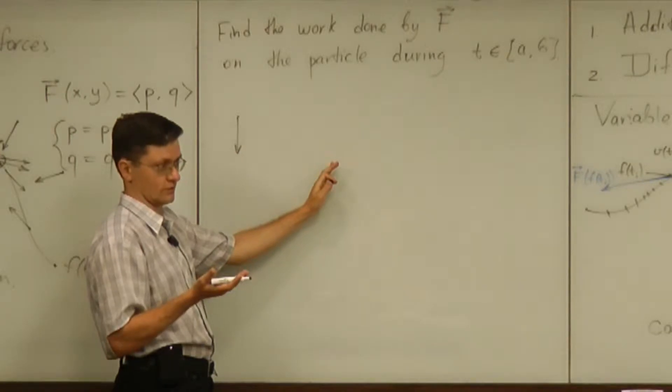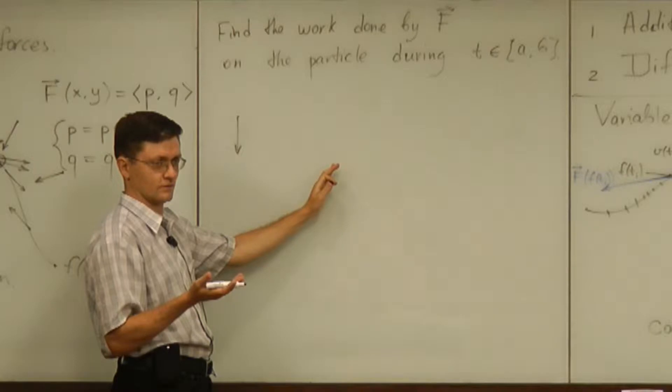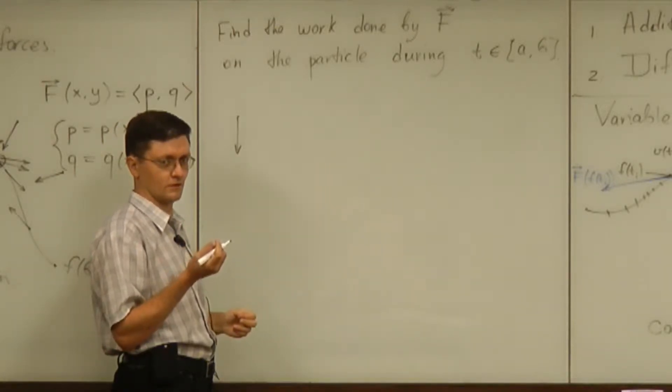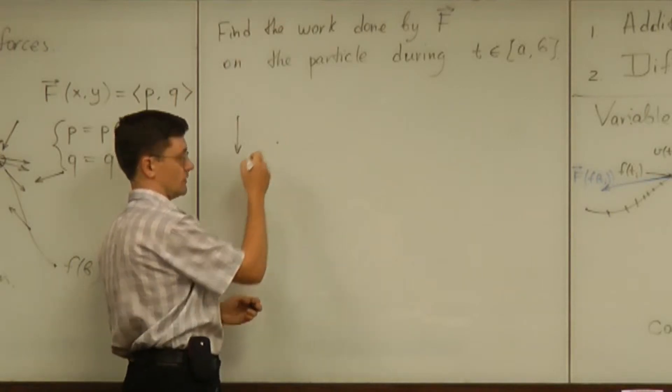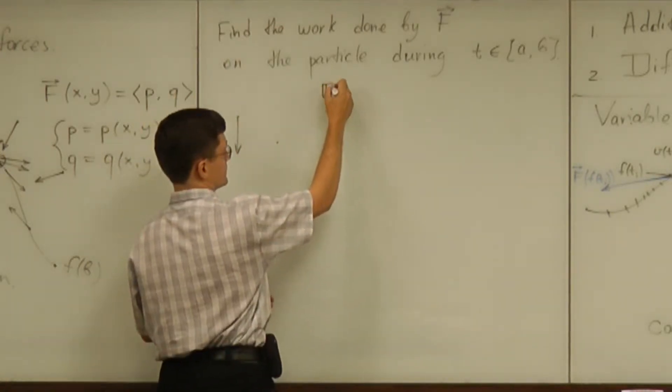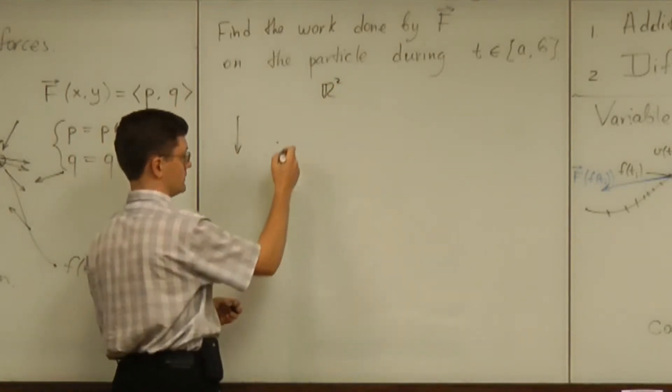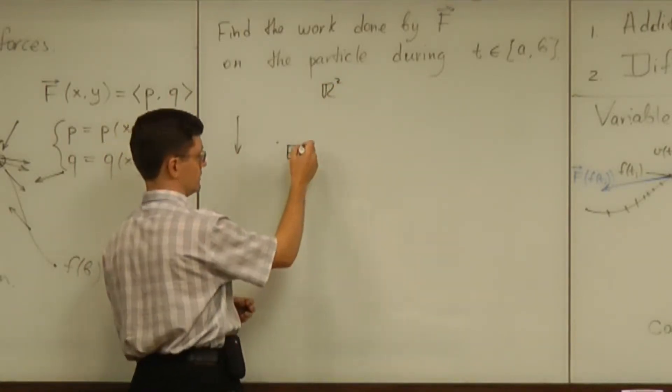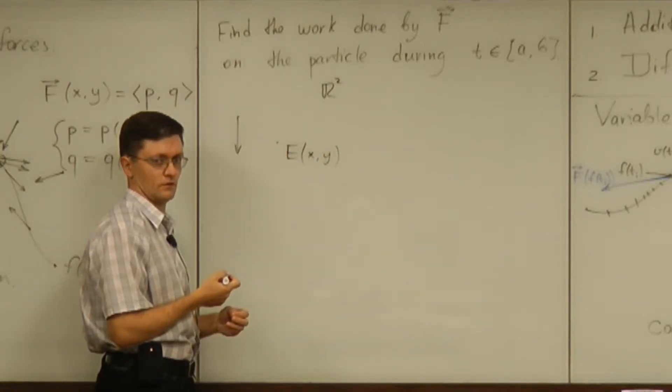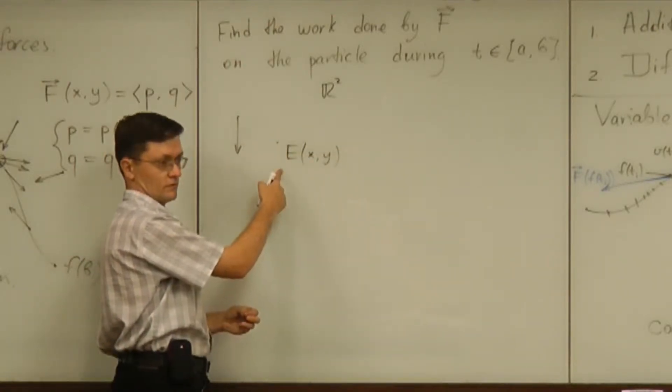And what is energy? Is it a vector? Is it just one number? Isn't it a number assigned to every point? So if this is a plane, so we keep looking at R2, isn't energy going to be a number assigned to every point of the plane? So it's going to be a function on a plane.